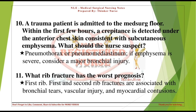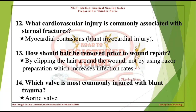What rib fracture has the worst prognosis? First rib. First and second rib fractures are associated with bronchial tears, vascular injury, and myocardial contusions. What cardiovascular injury is commonly associated with sternal fractures? Myocardial contusions — blunt myocardial injury.